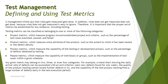Third, process metrics measure the capability of the testing or development process, such as the percentage of defects detected by testing — for example, how many defects you were able to identify that leaked from a previous phase. Fourth, people metrics measure the capability of individuals or groups of people, such as implementation of test cases within a given schedule, the effort involved, and whether you are taking longer to prepare test cases rather than executing them. People metrics help you to ramp up your team or upgrade their skill sets.